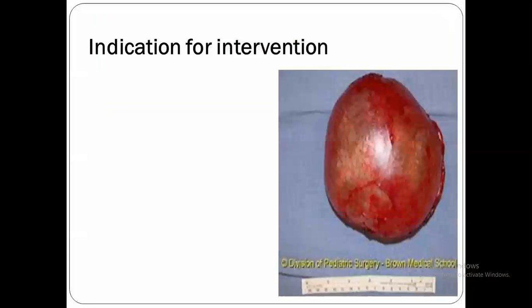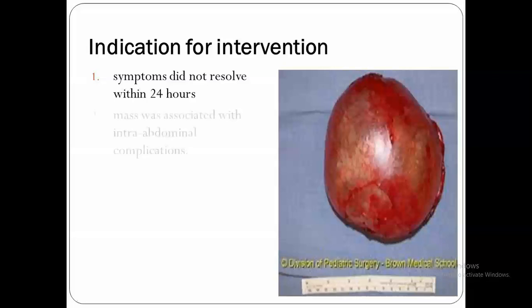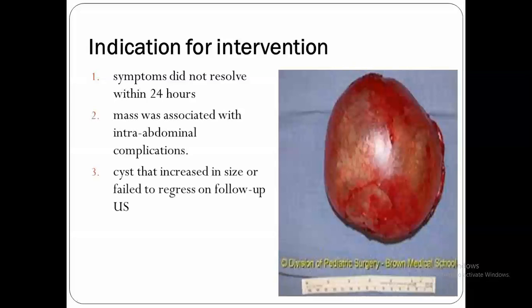What are the indications for intervention? Follicular cysts usually resolve spontaneously. The indication for intervention is if the patient presents with acute symptoms that are severe and do not resolve within 24 hours, if associated with complications such as hemorrhage with hemodynamic instability or torsion, or if the cyst increased in size or did not regress after a certain period of time.